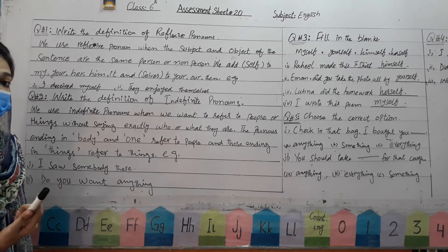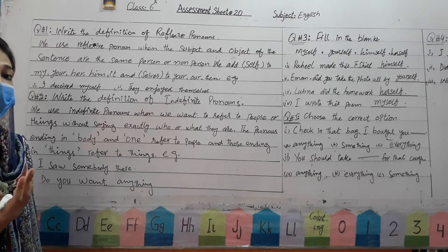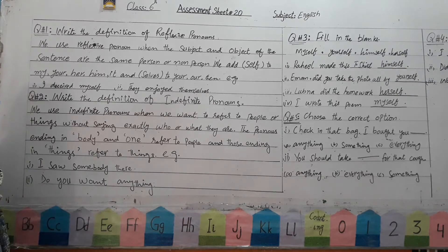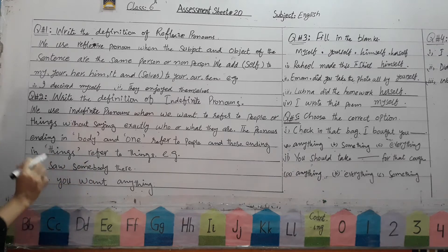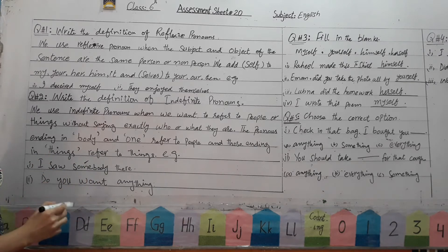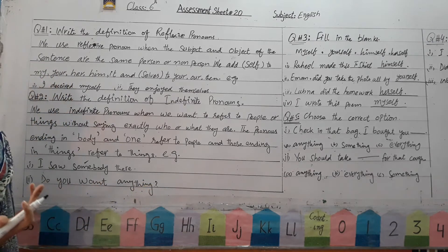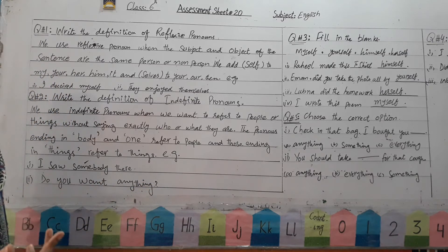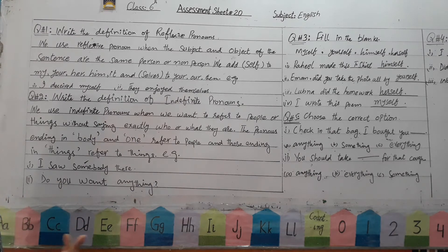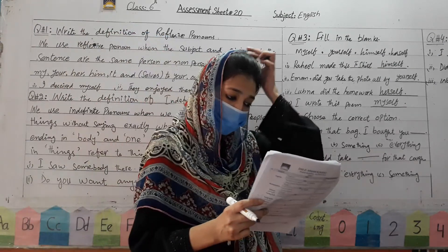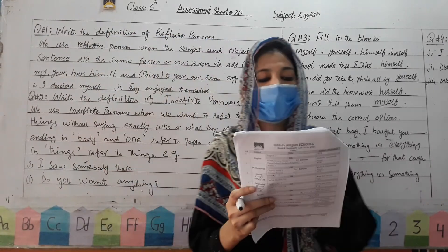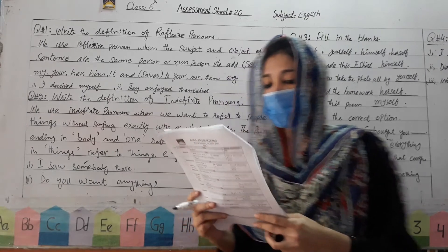Now, 'somebody' — we are not saying exactly who we are talking about. Such type of pronoun is called an indefinite pronoun. Another example: Do you want anything? Here we are not specifying water, tea, or coffee — just 'anything', meaning anything at all. This is called an indefinite pronoun.